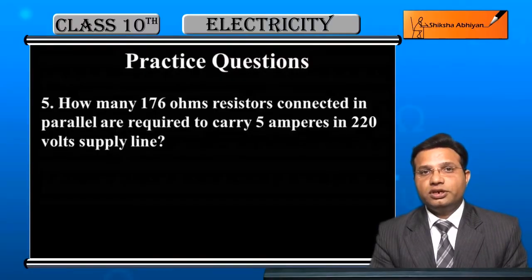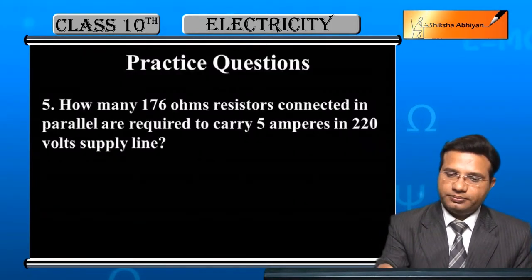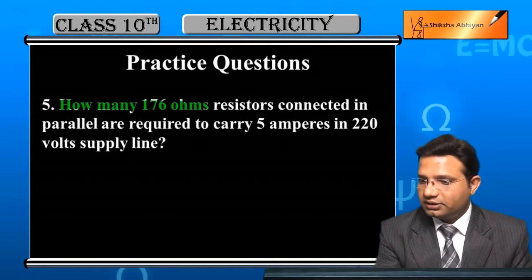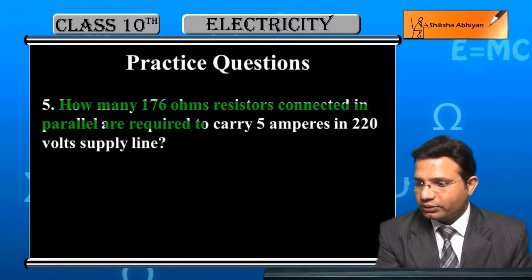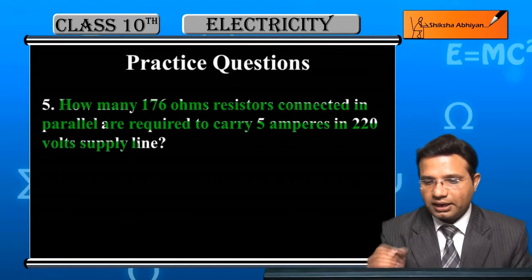Now question number 5 on the concept Ohm's law. Question is: how many 176 ohms resistors connected in parallel are required to carry 5 amperes in 220 volt supply line?